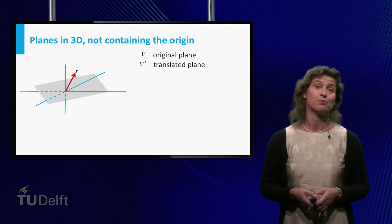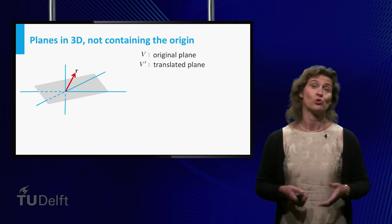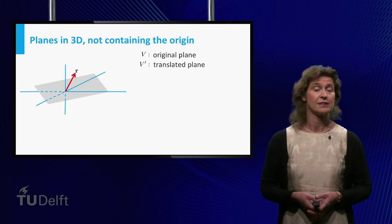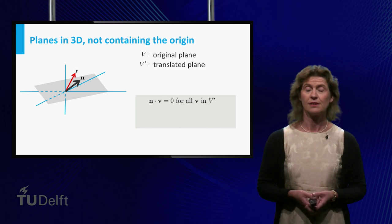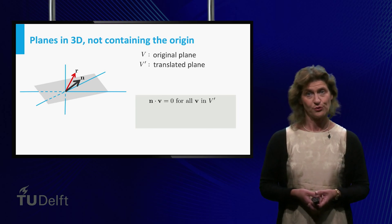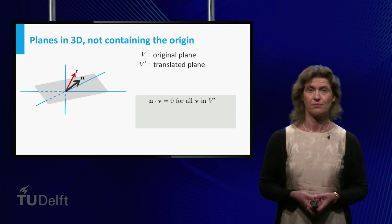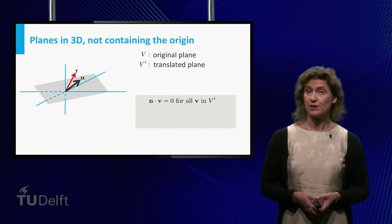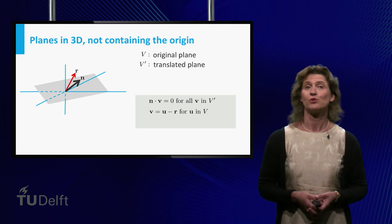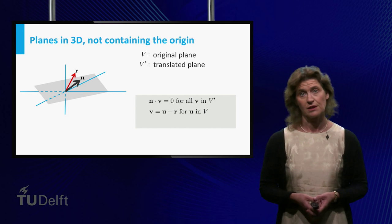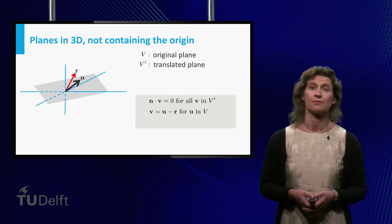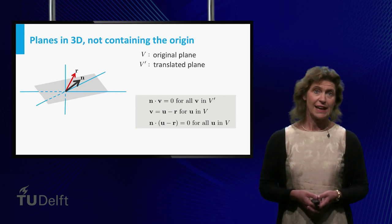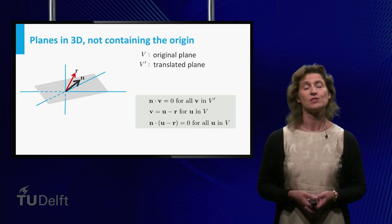Then translate the plane to the origin by subtracting the support vector r. So the translated plane contains the origin, so you know how to derive the vector equation. Writing v for a vector in the translated plane v', it is n dot product v equals 0. All vectors in the translated plane are of the form u minus r, because you translated each vector u over r.